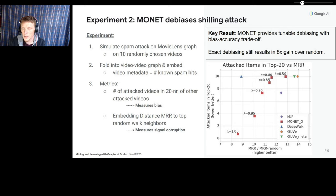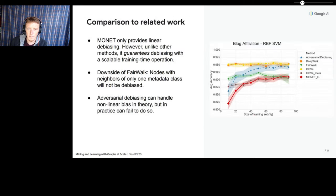So these two metrics trade off. The more bias a method has, in general, the more it is allowed to freely encode the graph signal, so the accuracy should be higher. What we found is that only MONET can completely debias the shilling attack and still achieves embedding distance rank accuracy eight times better than random. Also, tuning MONET's projection strength parameter provides a smooth path from perfect debiasing to non-debiasing accuracy.